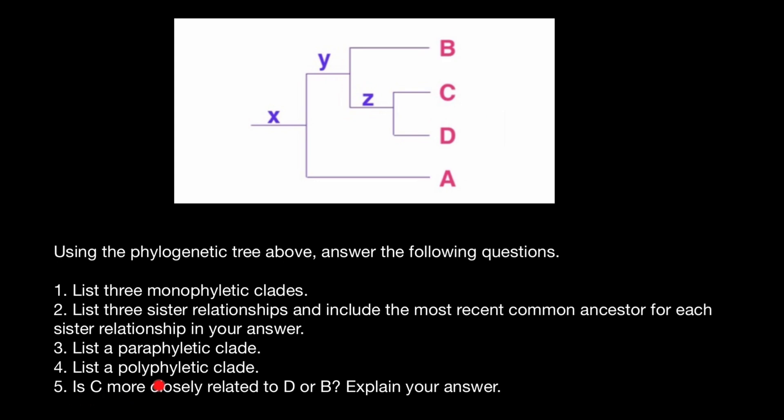And the last question: is C more closely related to D or B? Because C and D share a more recent common ancestor, they are more closely related. So C is more closely related to D than with B, where it has a recent common ancestor here.